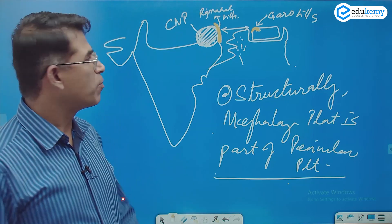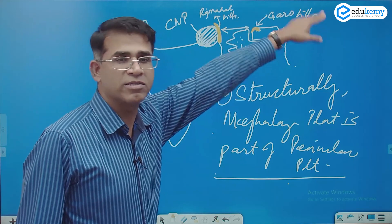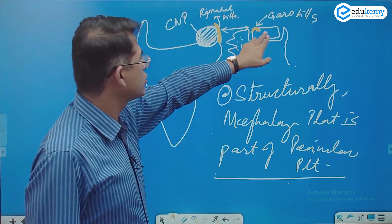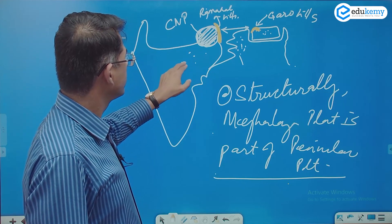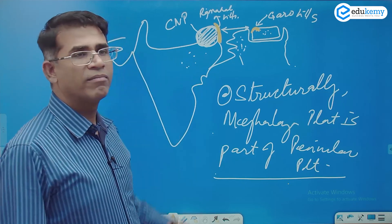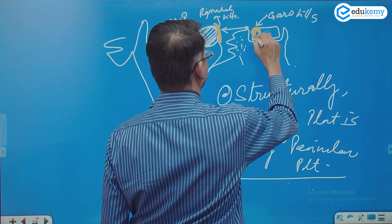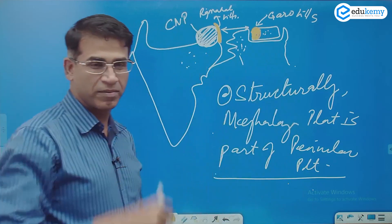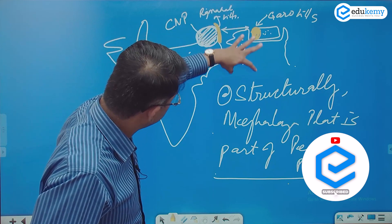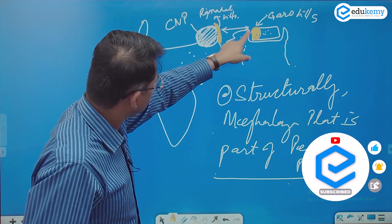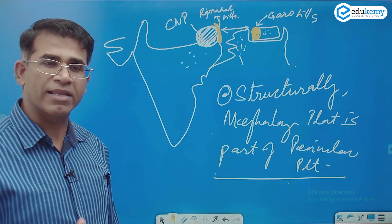Structurally, the Meghalaya plateau is part of the peninsular plateau. Meghalaya does not belong to the Himalayas — Meghalaya's rocks are very similar to the rocks of the plateau. This gap is the Malda Gap or Raj Mahal Garo Gap — both names refer to the same thing.